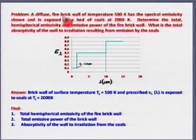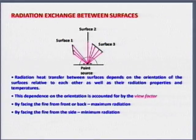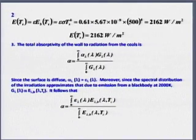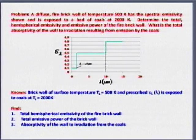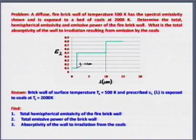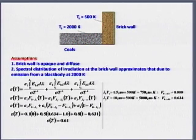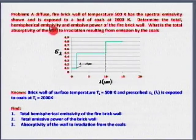First problem: a diffuse firebrick wall at 500 K is exposed to a bed of coal at 2000 K. The spectral emissivity for that brick wall is given by a graph. Determine: the total hemispherical emissivity, the total emissive power of the brick wall, and the total absorptivity of the wall to the irradiation resulting from emission by the coal.